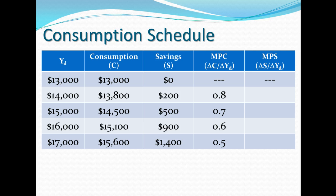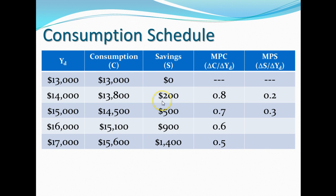The marginal propensity to save in those same years is just what's left over to get back to one. So for the first year MPC is 0.8, so MPS is 0.2. The next year MPC is 0.7, so MPS is 0.3 because they saved $200 over an additional $1,000. The year after, they saved $300 over $1,000, so it's 0.3. So forth and so on — that's the marginal propensity to save and the marginal propensity to consume.